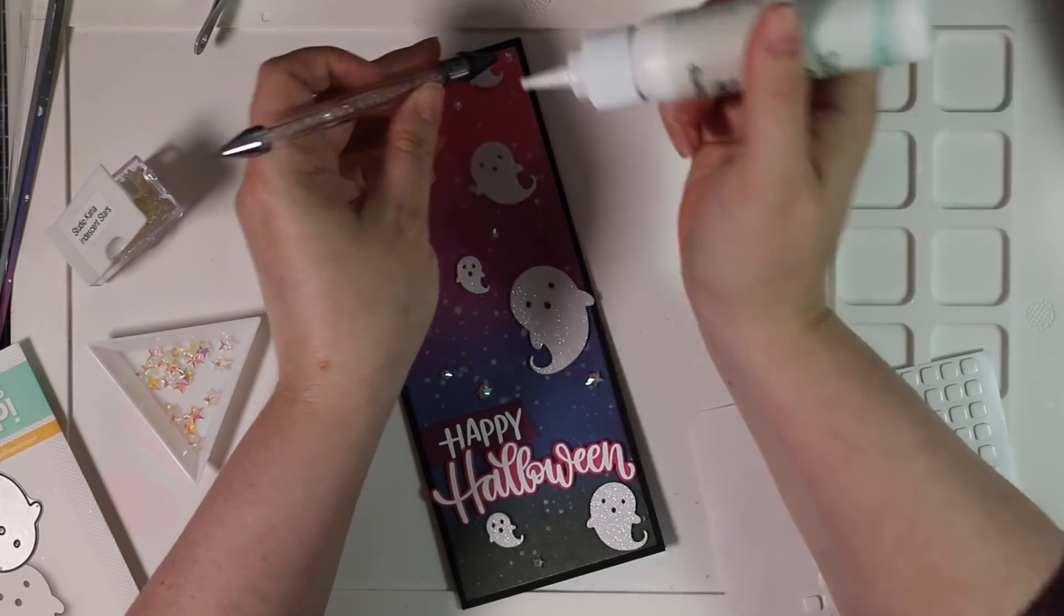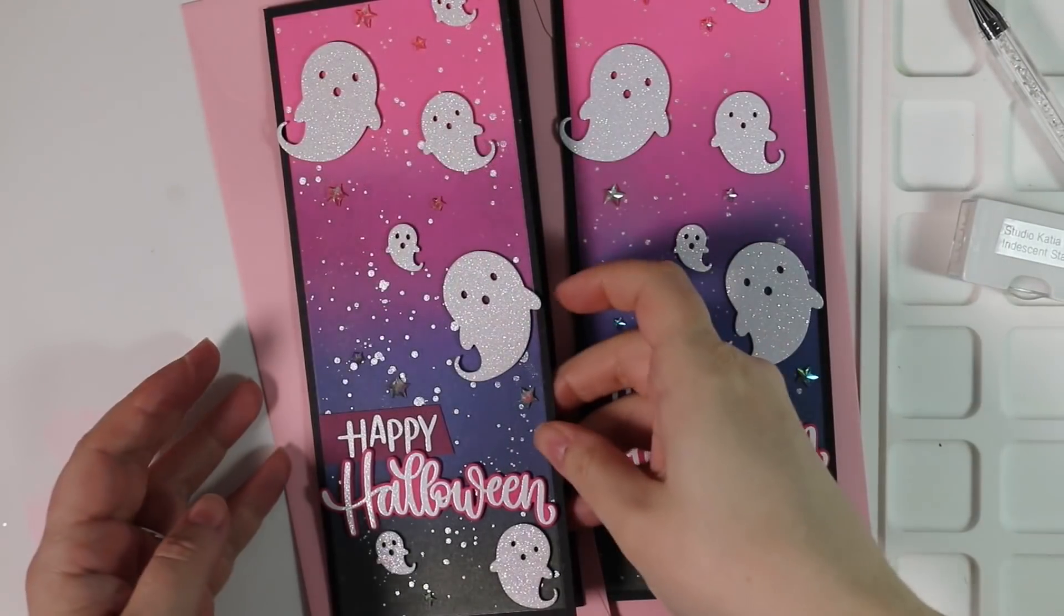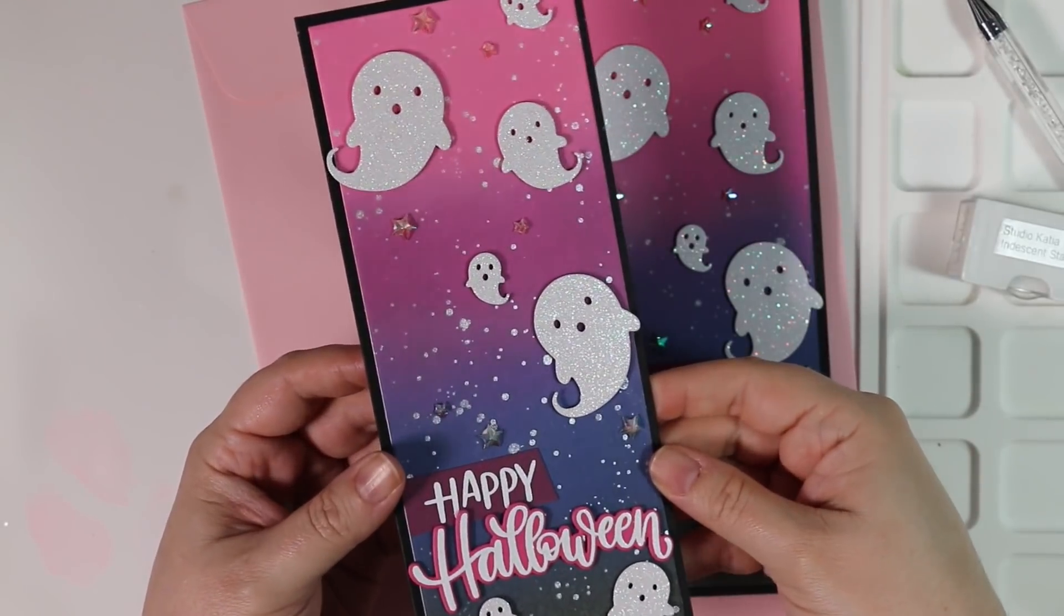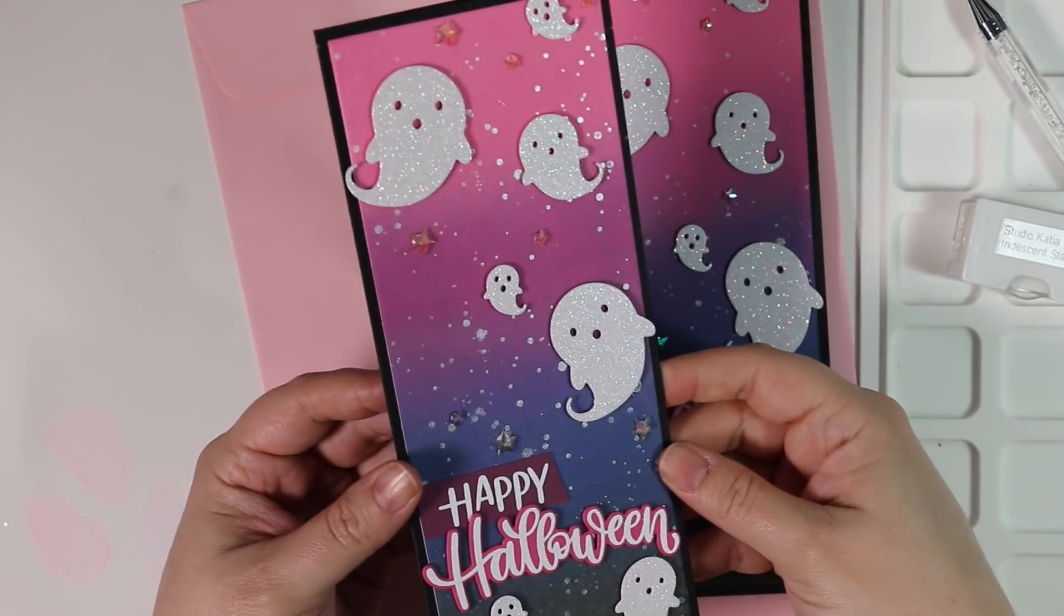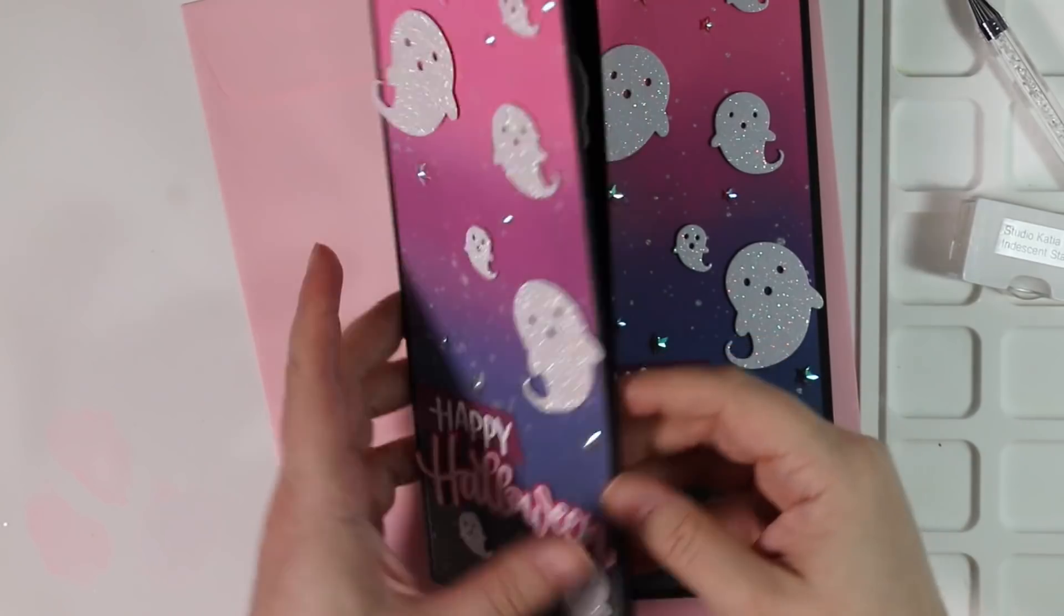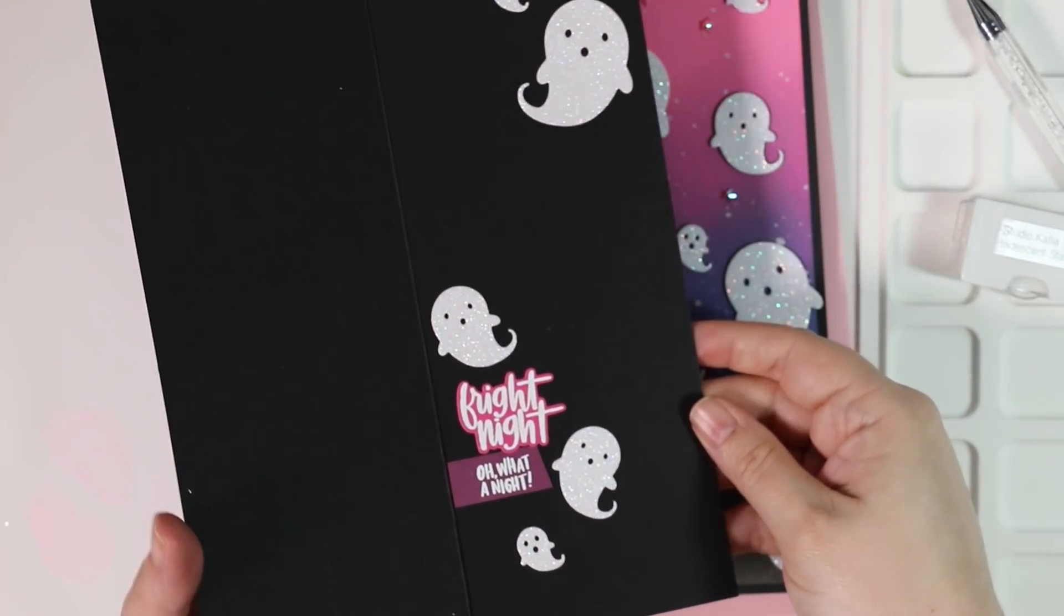And then once this card was complete, I paired these with just some Simon Says Stamp cotton candy pink slimline envelopes, just to kind of pull in a bit more pink, because why not? It's an unexpected color for Halloween and I just love it.